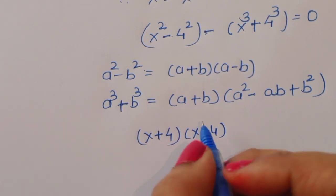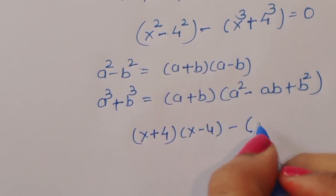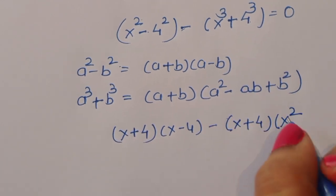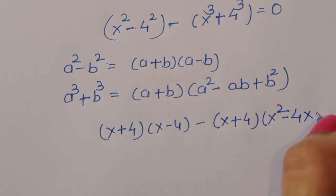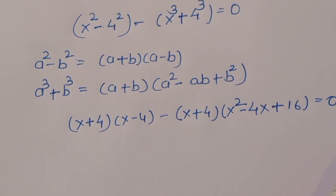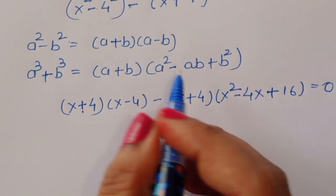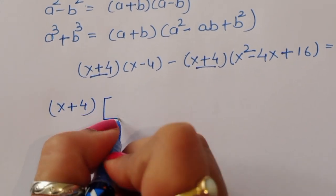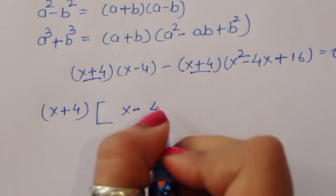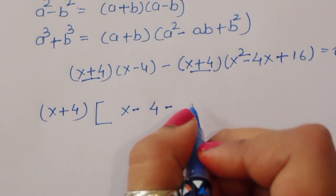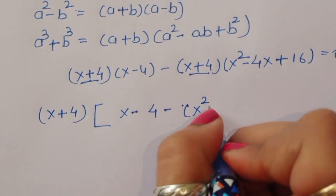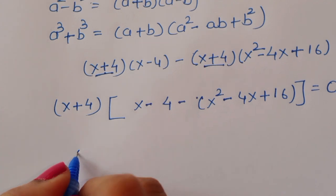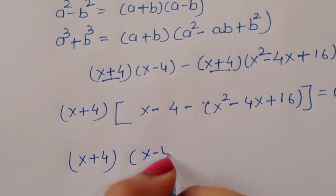Applying the formulas: x squared minus 4 squared gives (x plus 4)(x minus 4). For x cubed minus 4 cubed, we get (x plus 4)(x squared minus 4x plus 16). So the equation becomes (x plus 4)(x minus 4) minus (x plus 4)(x squared minus 4x plus 16) equals 0.